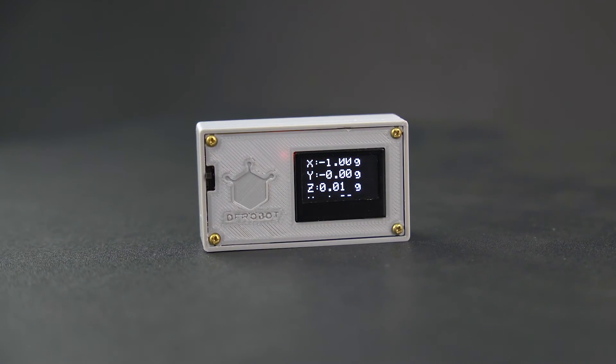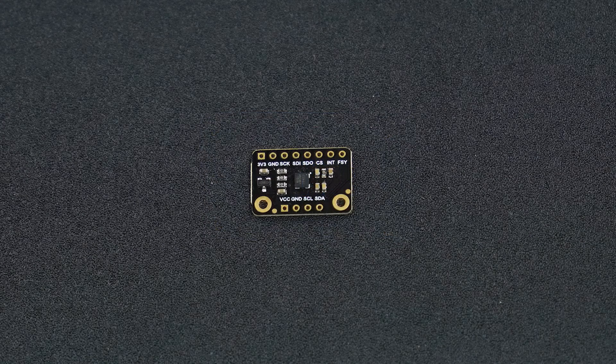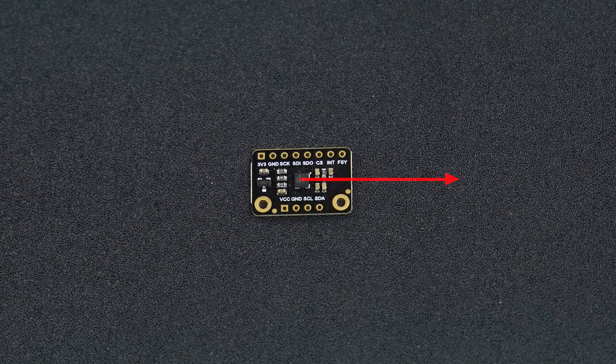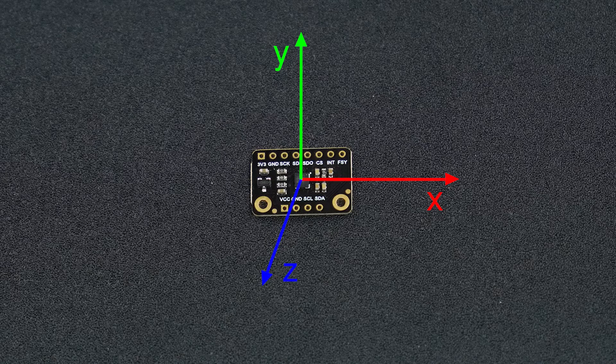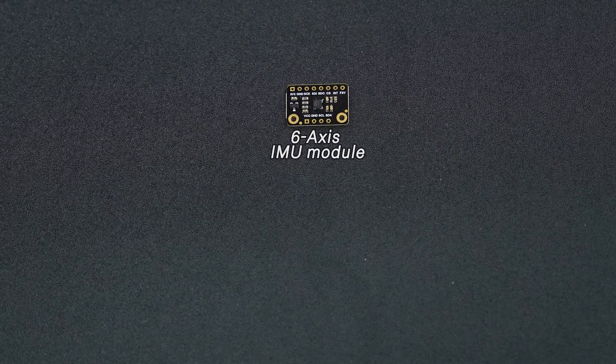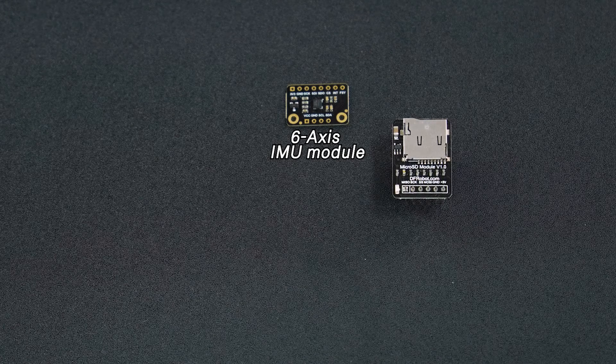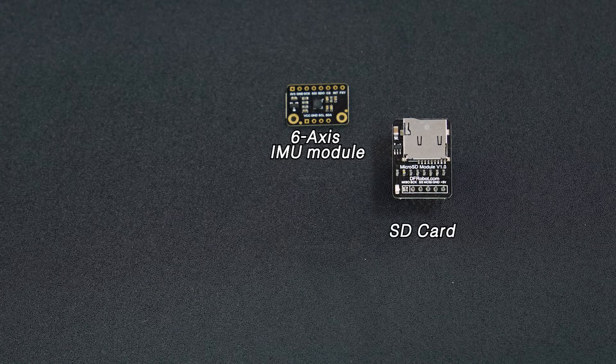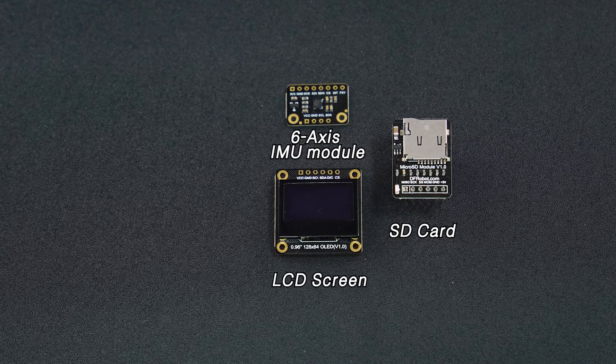So next, let's see how to use SPI. Here, we use a 6-axis IMU module from DFRobot to detect the acceleration along the X, Y, and Z axes. Then, save the data on a microSD card and display the acceleration on an LCD screen.